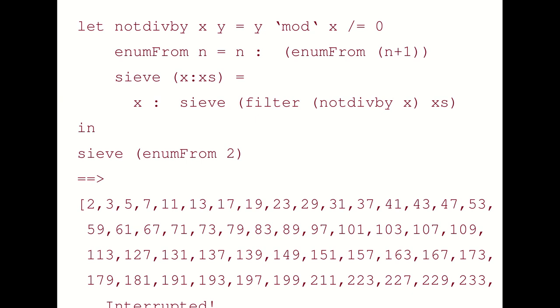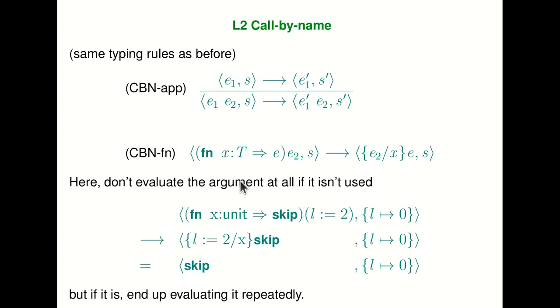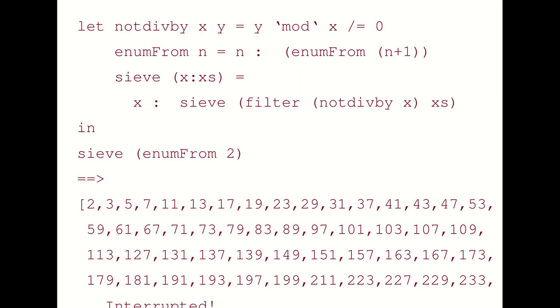Call-by-name is not used much anymore in modern imperative languages. But a variant called call-by-need is still used in the functional programming language Haskell. In Haskell it uses call-by-name evaluation, except it doesn't evaluate expressions repeatedly. You substitute an expression unevaluated for a parameter just like in call-by-name, but there's some memoization so that if it's evaluated once you save the value and never evaluate it a second time.